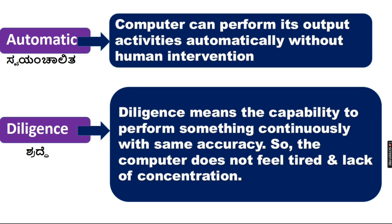Diligence means the capacity to perform something continuously with the same accuracy. So if you want to do the same task repeatedly, the computer will perform it with the same accuracy every time.